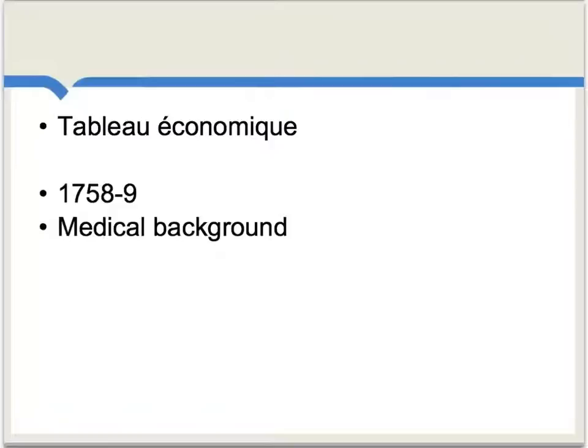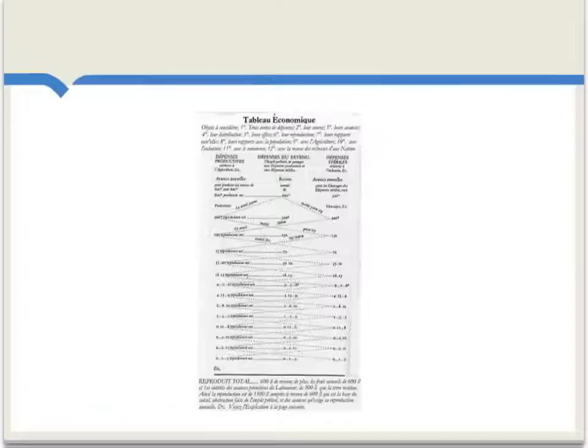Here's a reproduction of the tableau, which is a somewhat strange zigzag diagram, but basically the zigzags are tracing the flow of funds through an economy, and the diagram is intended to be used for what we would now call comparative statics. That is, you would introduce some change in funds or economic activity at some point in the diagram, and then by following the zigzags you would trace how this would affect the overall economy.